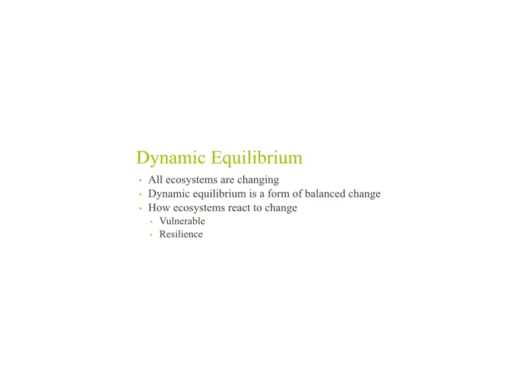All ecosystems exist in dynamic equilibrium in that they are always changing. The more dynamic an ecosystem tends to be, the less vulnerable and more resilient it is. Dynamic equilibrium is the state in which an ecosystem is constantly existing — there is always change — and we're looking at how these ecosystems become vulnerable and how they are resilient against stresses.